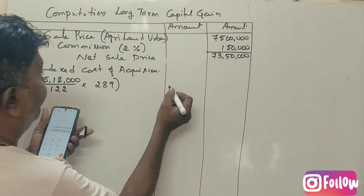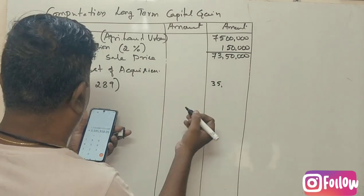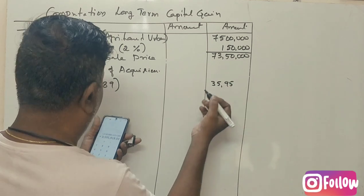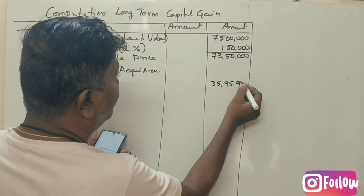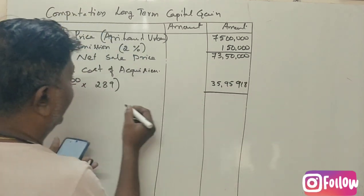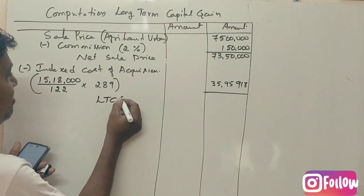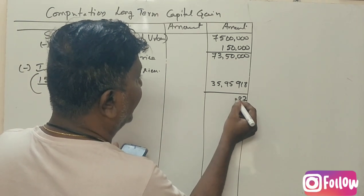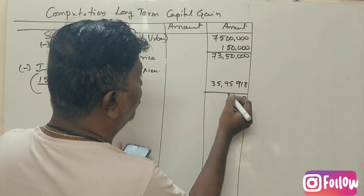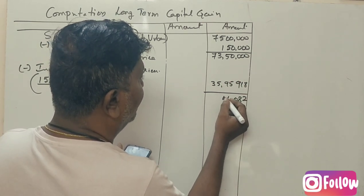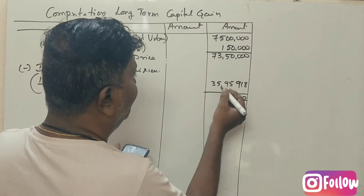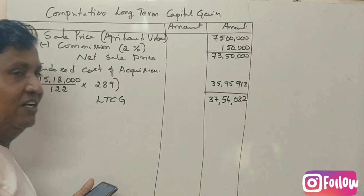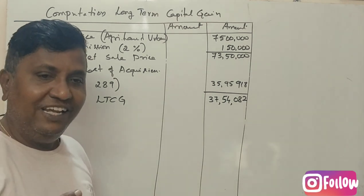The indexed cost of acquisition comes to 35,95,918 (approximately). The long-term capital gain is the net sale price minus the indexed cost of acquisition, which equals 37,54,082 rupees.